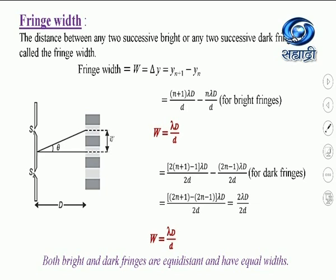From these two equations we can see that the fringe width for bright and dark fringes is the same. So we can say that both bright and dark fringes are equidistant and have equal widths. The fringe width w is directly proportional to the wavelength of light used, directly proportional to D (the distance between slits and screen), and inversely proportional to d (the distance between the two slits).